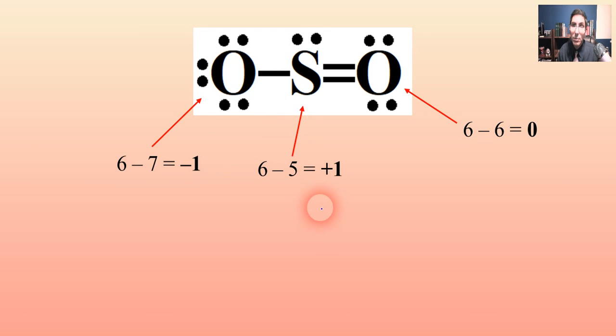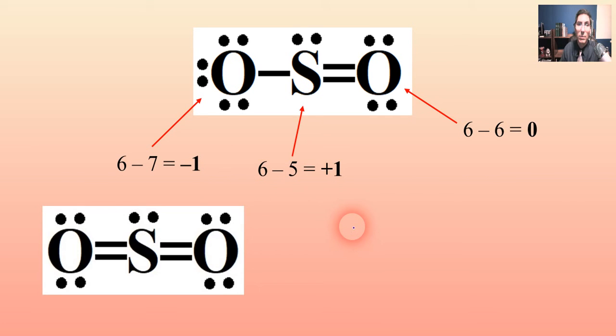Here we have a case where everything's obeying the octet rule, but actually this is not the best case scenario because the best case scenario would be to have 0s all the way across. And so we actually find that the structure that is usually going to exist is going to be this one. And I know that this does not actually obey the octet rule, or at least sulfur does not obey the octet rule, but it does give us a shape in which everything has a formal charge of 0. So this is actually a more stable shape.